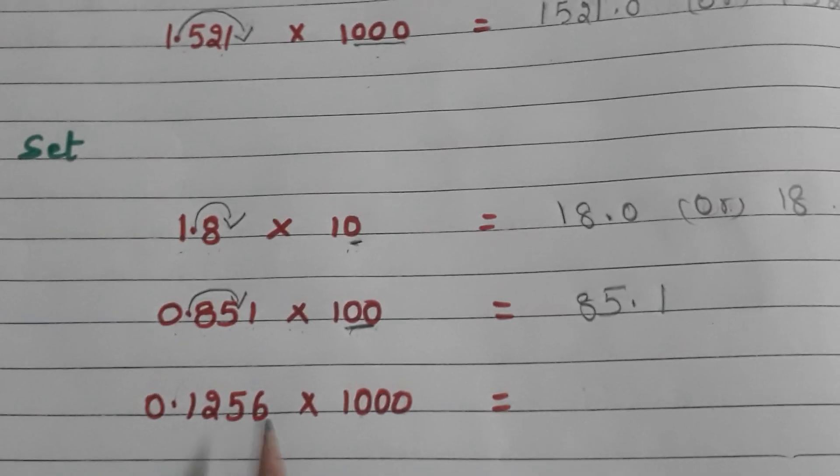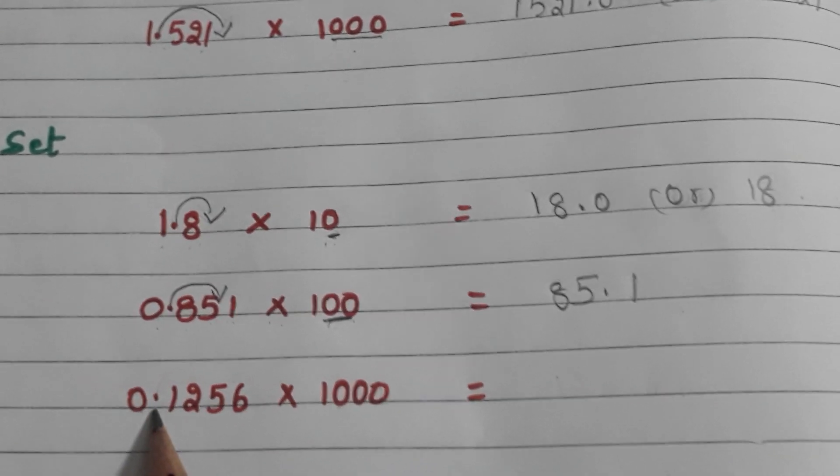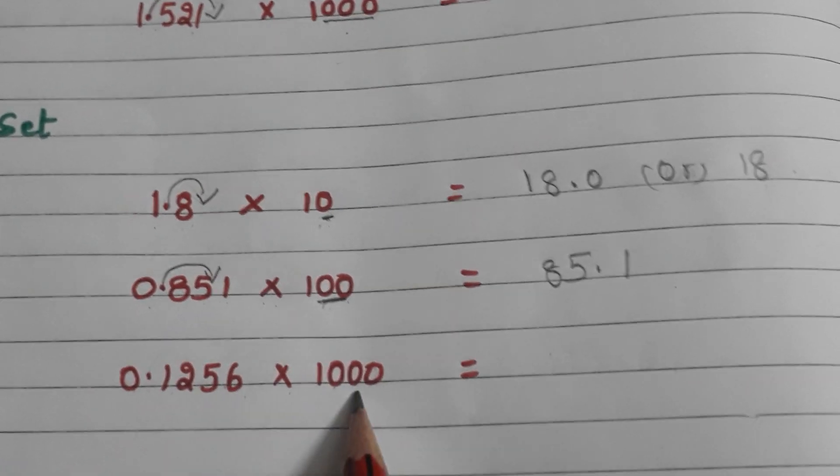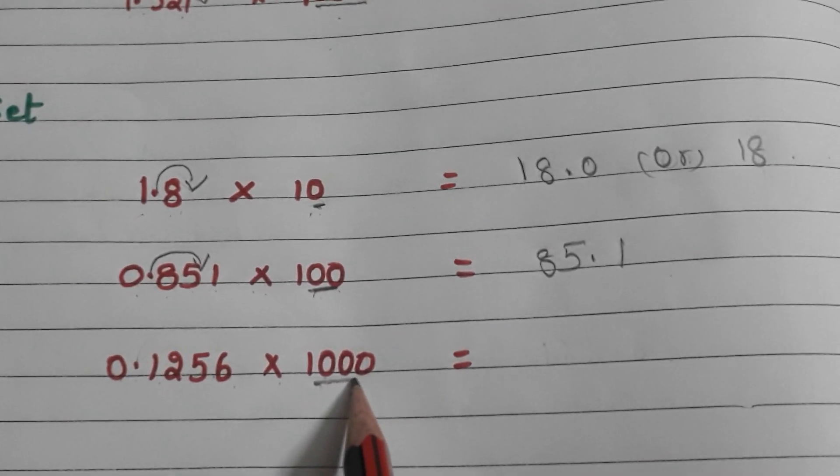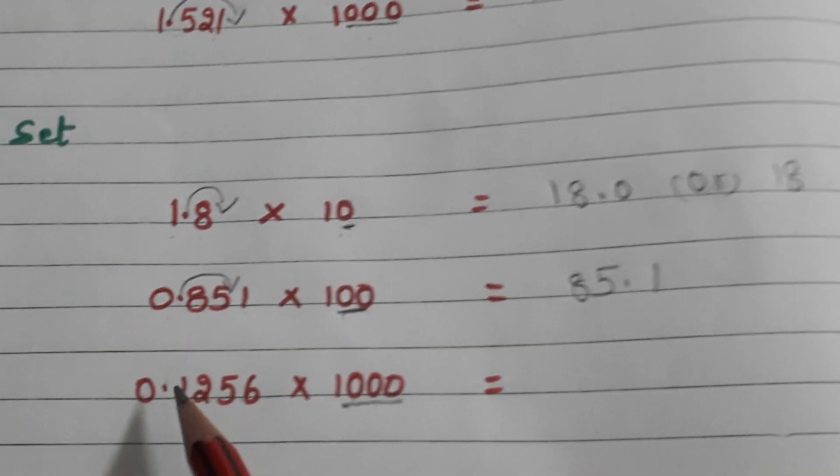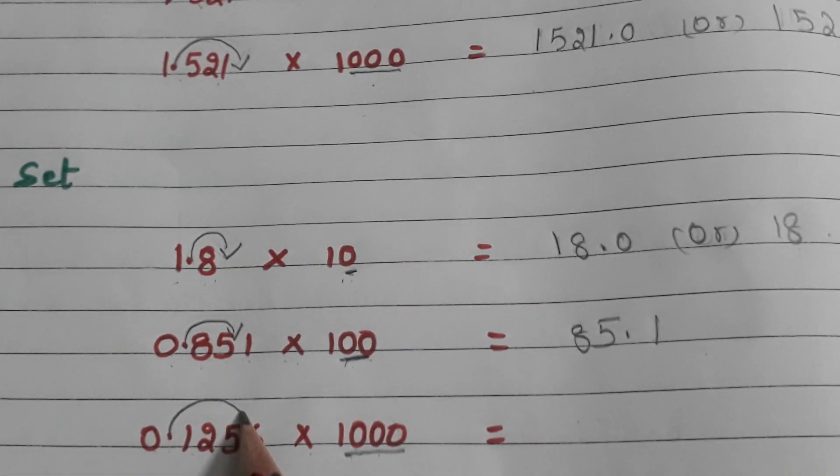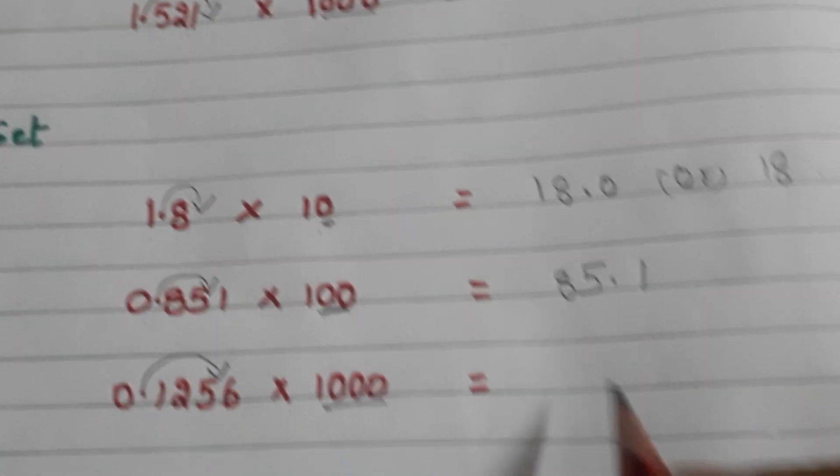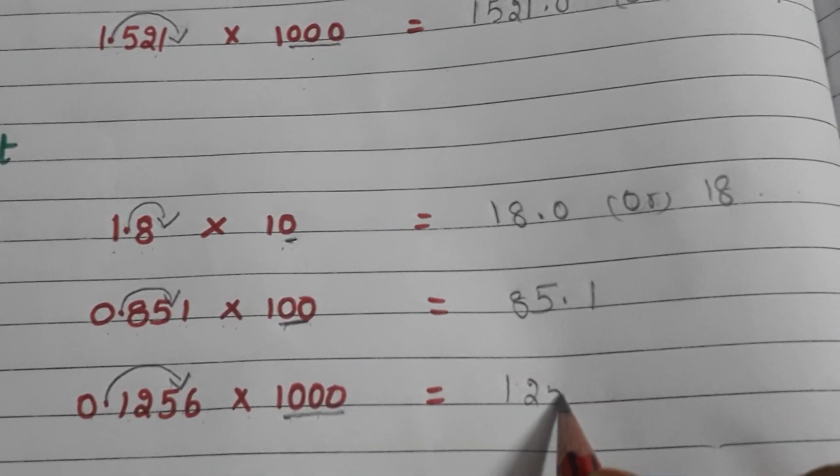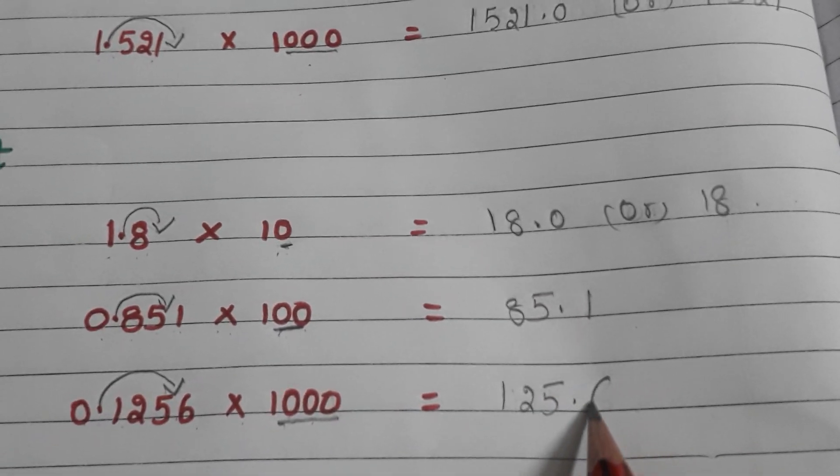Let us go to the last example. 0.1256 into 1000. In 1000 how many zeros are there? Three zeros. So I am moving the decimal by three places to right side. The answer will be 125.6.